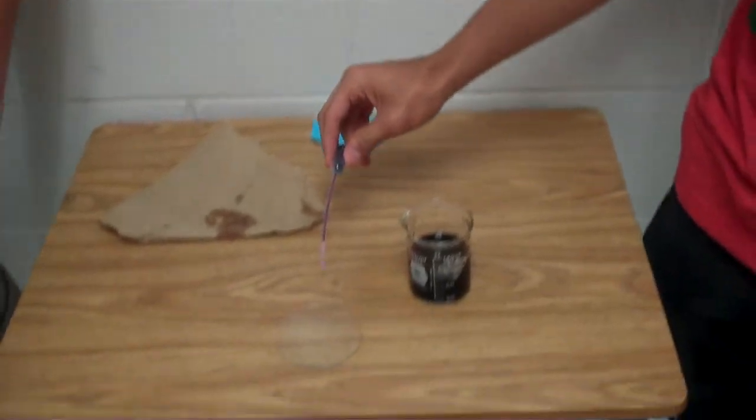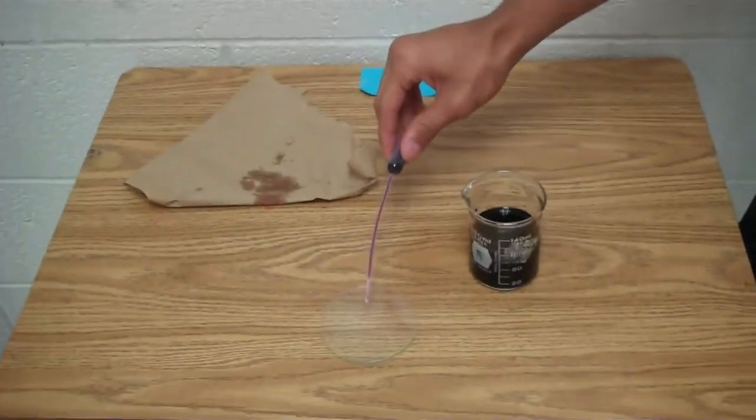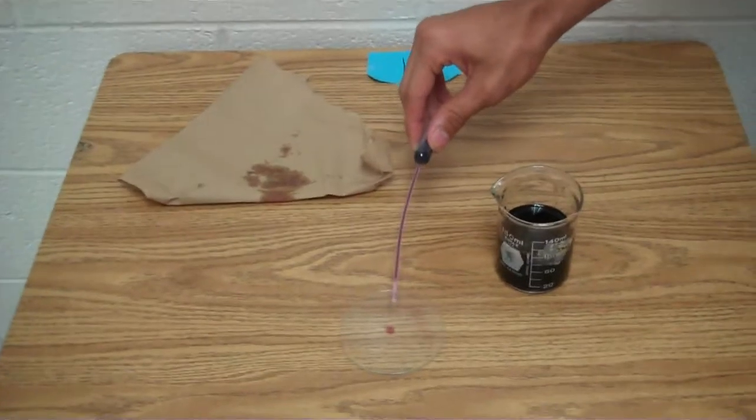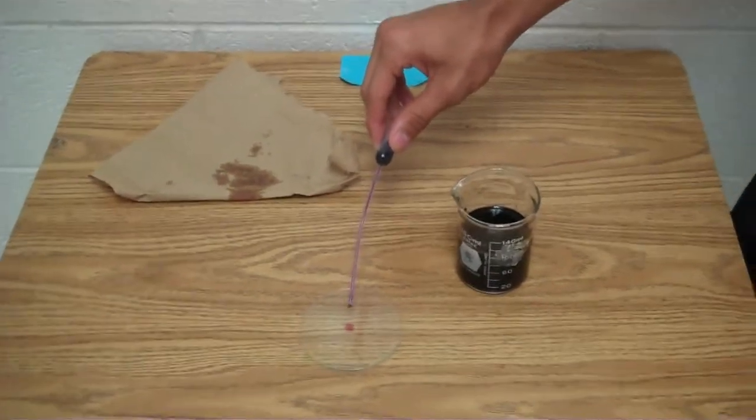And now, to release the liquid, slowly squeeze the bulb to release one drop. To release more than one drop, you squeeze the bulb just a little bit harder.